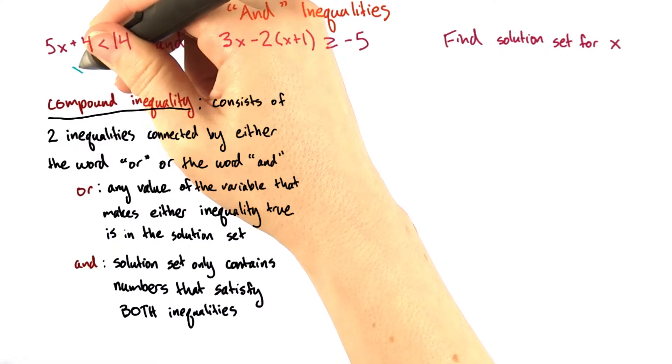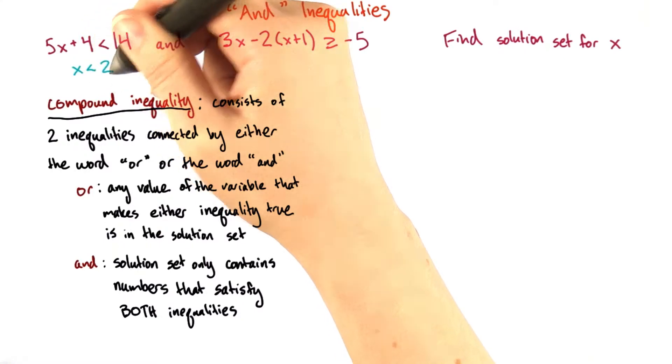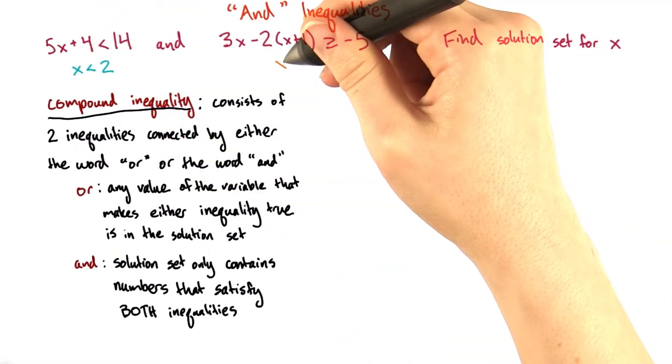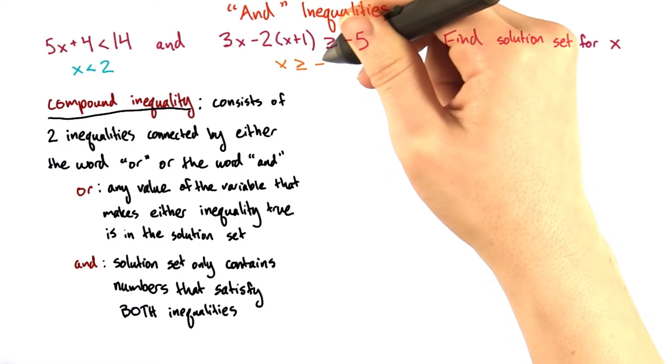So skipping a few steps, this simplifies to x is less than 2. And this one simplifies to x is greater than or equal to negative 3.